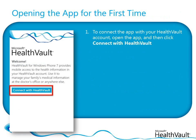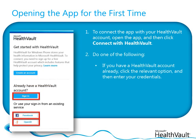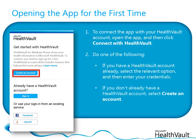Select Connect with HealthVault. If you already have a HealthVault account, select the option to sign in with the credentials you normally use to access your account on your computer, such as a Windows Live ID, a Facebook account, or an OpenID, and then enter your credentials. If you don't already have a HealthVault account, you can create one by selecting Create an Account.